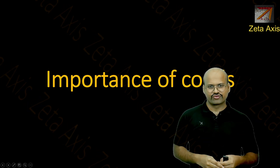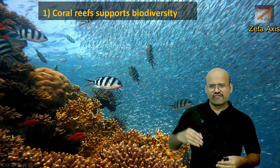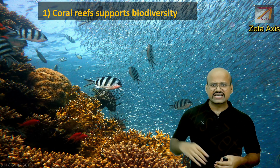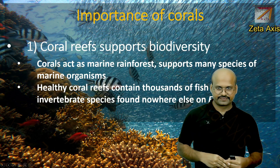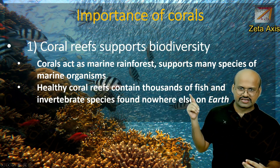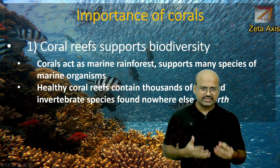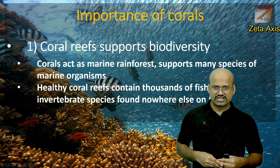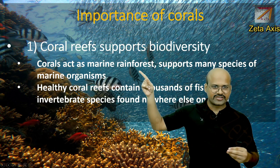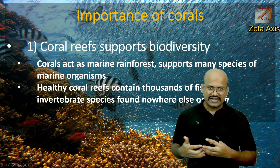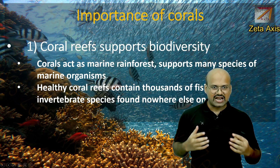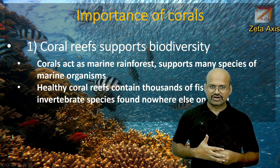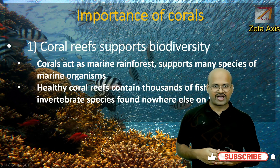Now let's see the importance of corals. Corals support many different types of living organisms — small fish, large fish, and different types of plant life — making them a hub of biodiversity. Healthy coral reefs contain thousands of fish and invertebrate species found nowhere else on Earth. These organisms are endemic only to coral regions and cannot survive anywhere else. Coral is also called the 'marine rainforest' because it supports many species of marine organisms and produces large amounts of oxygen through photosynthesis via the zooxanthellae algae.